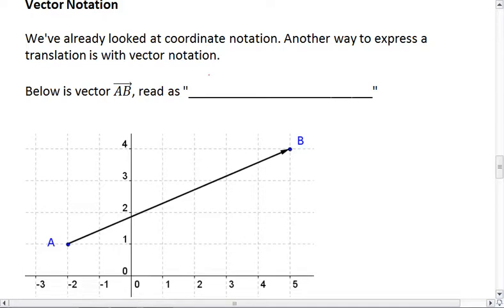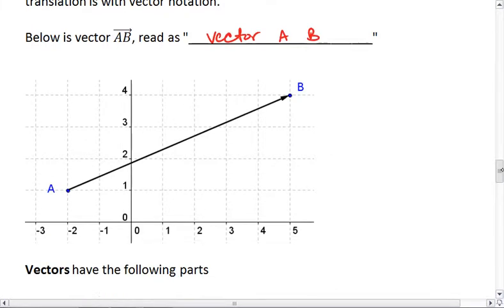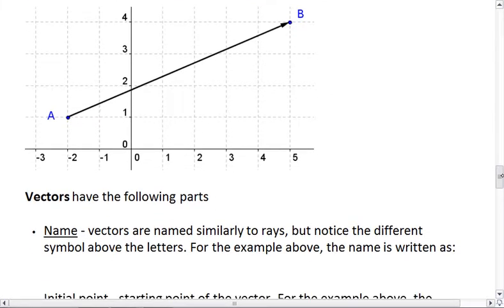So below, vector AB is read as vector AB. Vectors have the following parts. They have a name. We name it starting with our starting point, A, and then putting our ending point. To figure out which point's the ending point, you want to look for the tip of the arrow on your vector. This makes B our ending point.